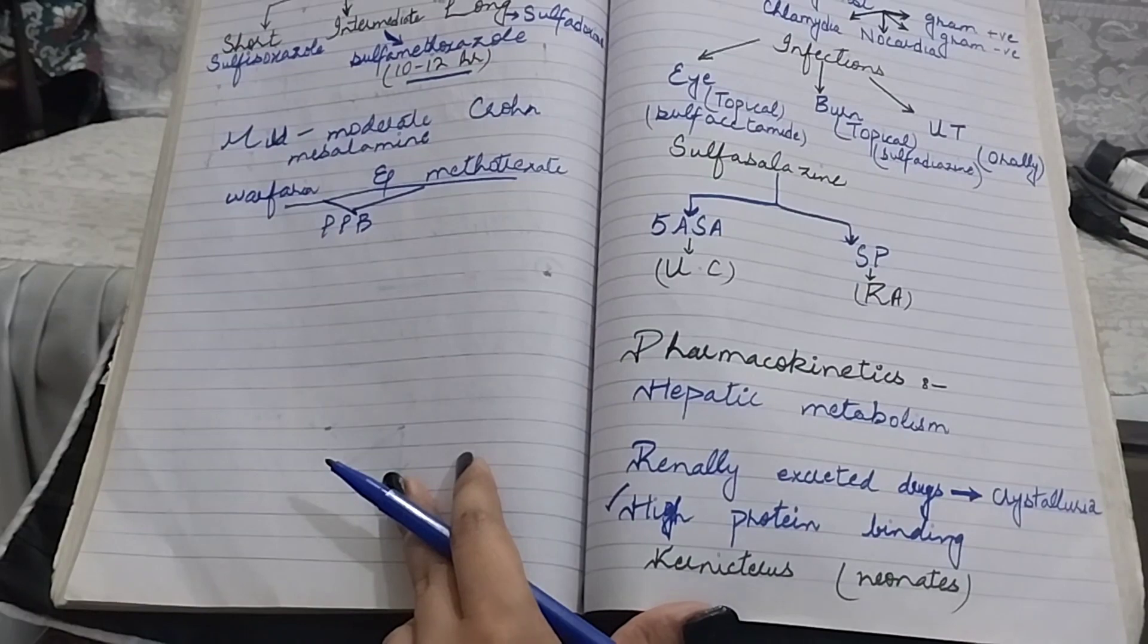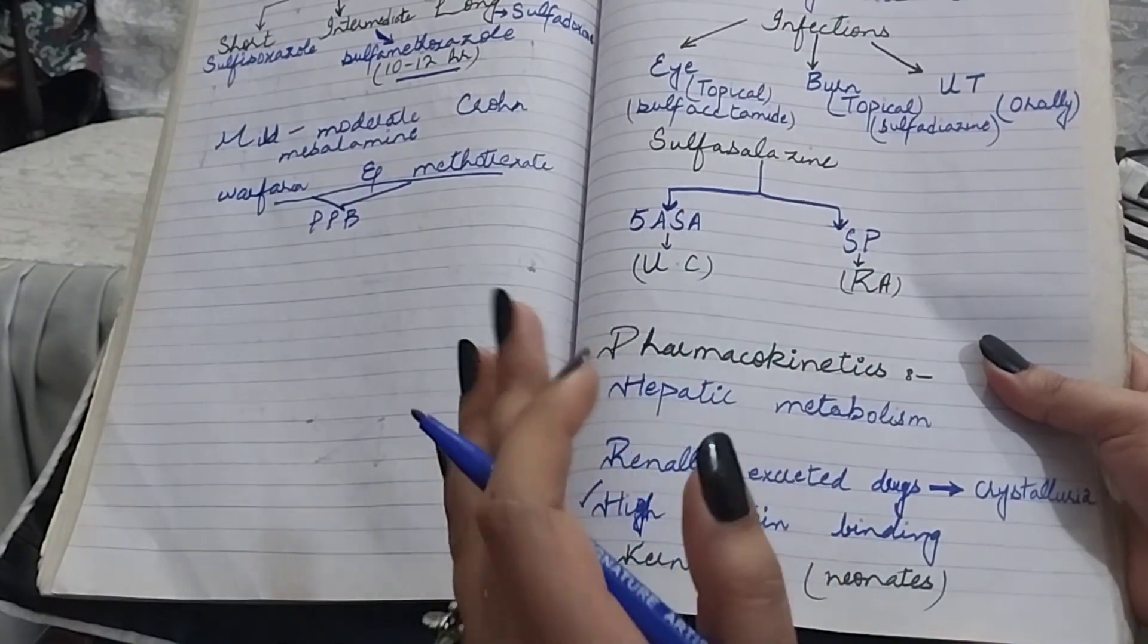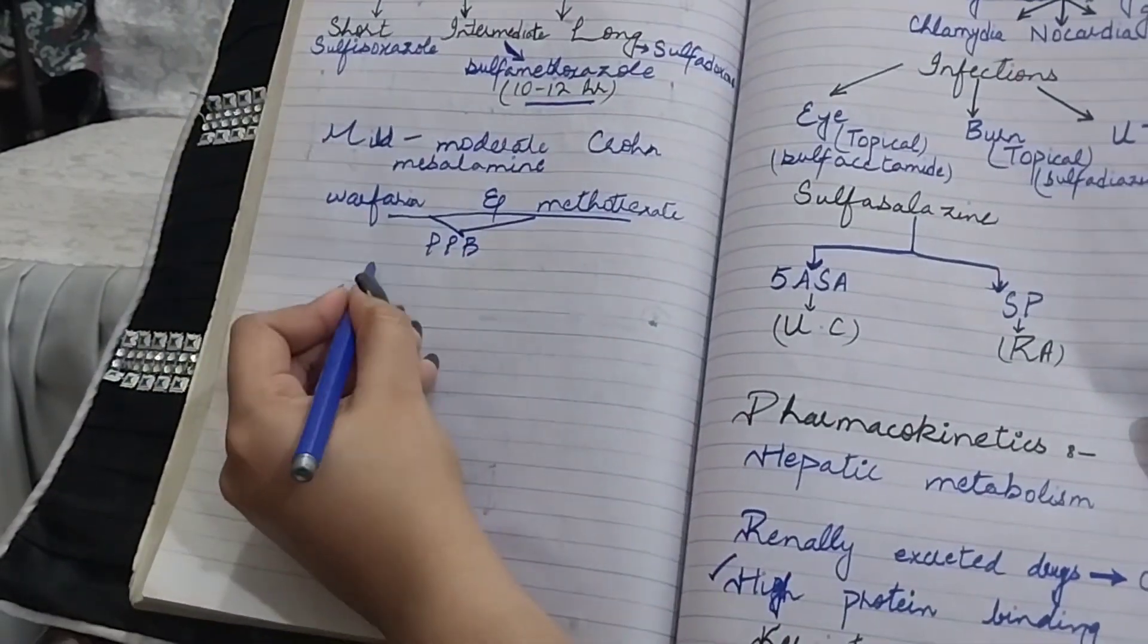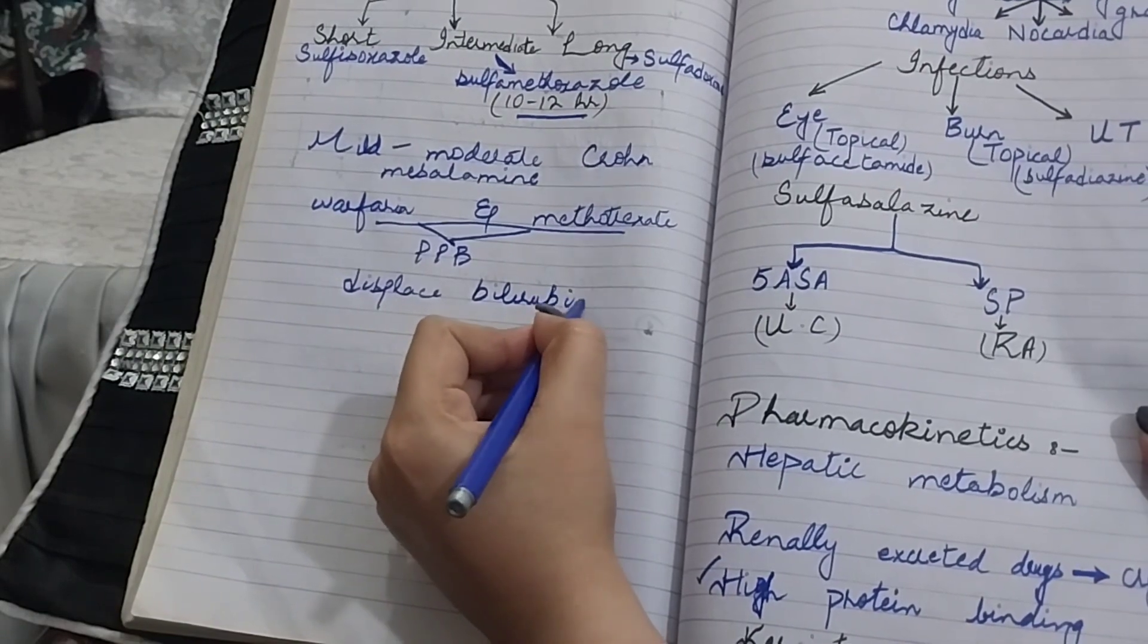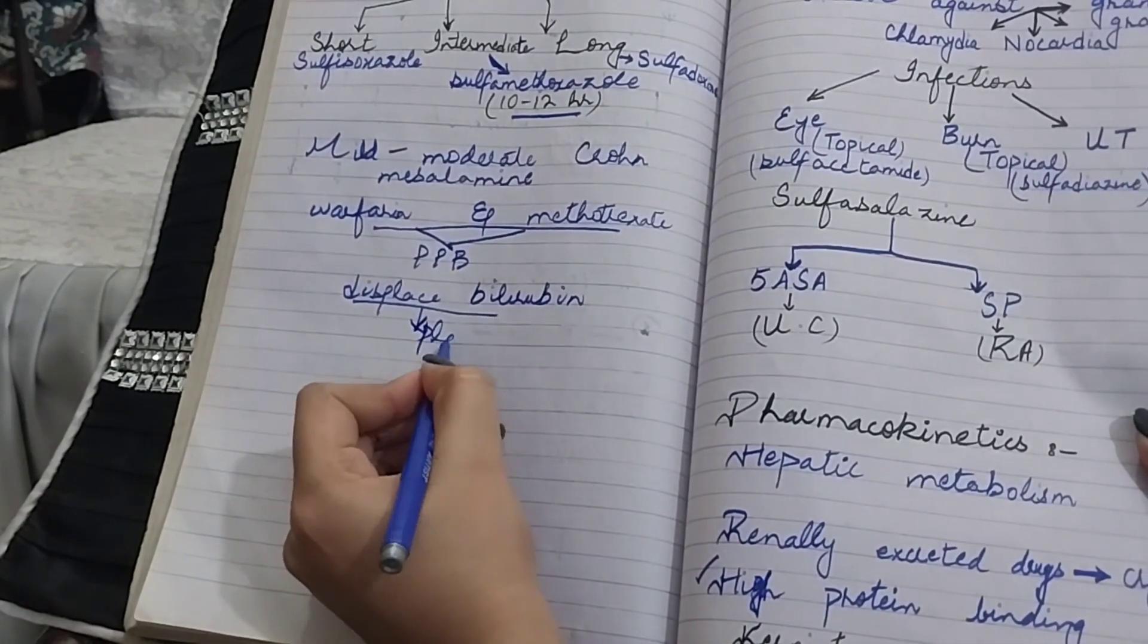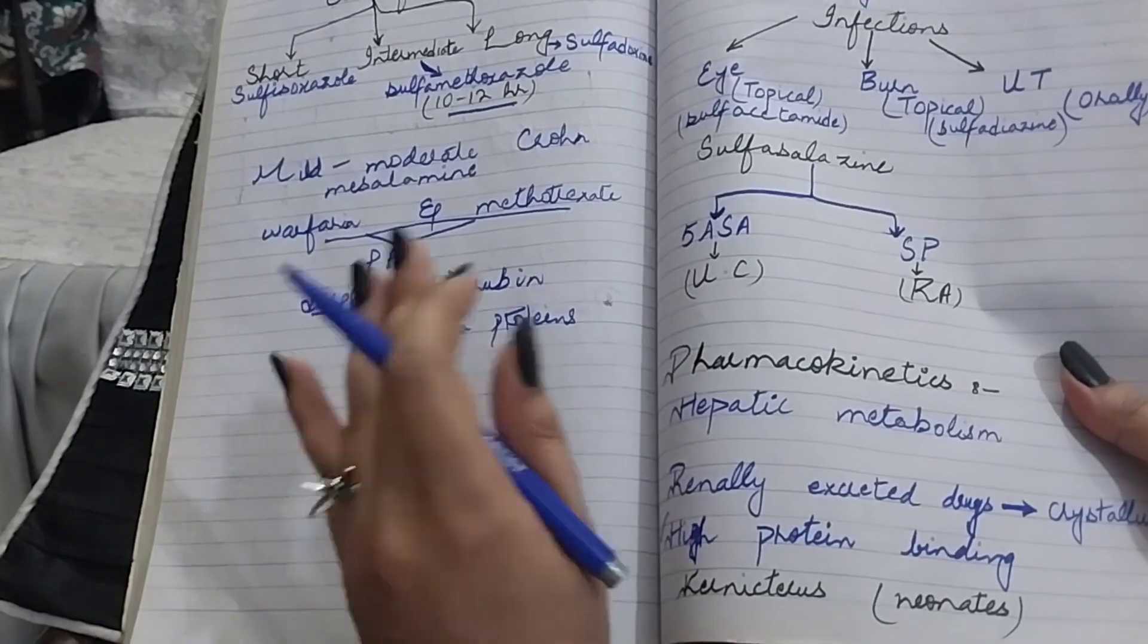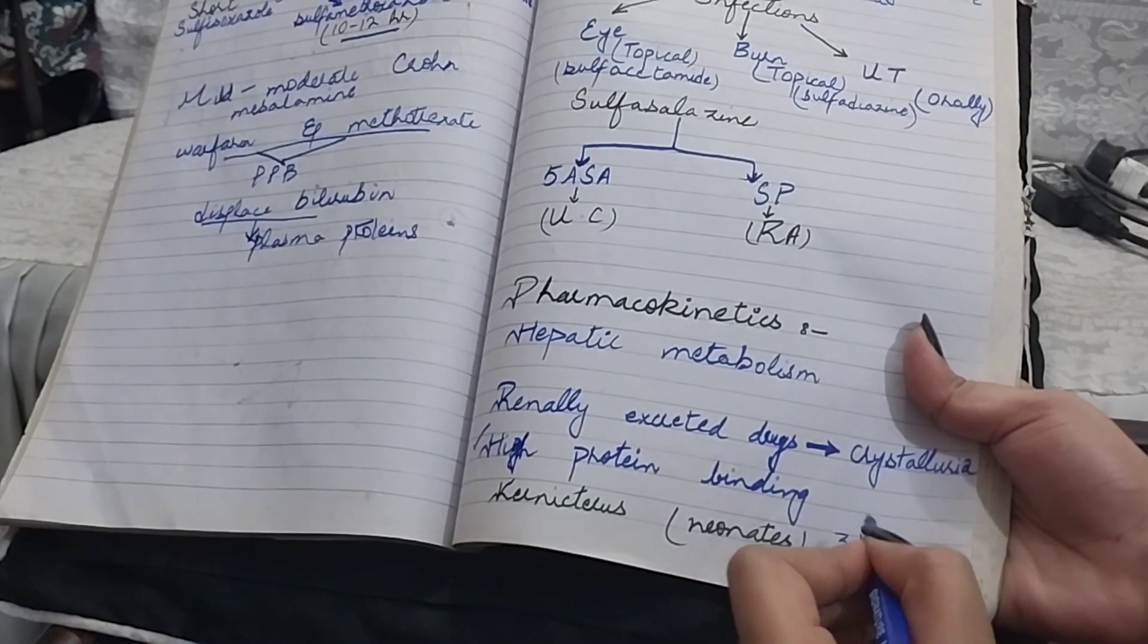Sulfonamides are contraindicated in pregnancy because they can cause kernicterus in neonates if sulfonamide is used in third trimester. The reason behind it is that sulfonamide can displace bilirubin from albumin. This can put neonates at risk of kernicterus if sulfonamide is used in third trimester of pregnancy.